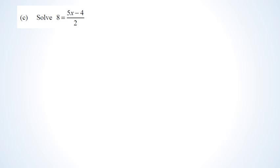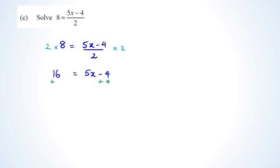With this question you've been asked to solve for x. The first thing I'm going to do is get rid of that 2, so I multiply both sides by 2, which means my left-hand side equals 16. Then on my right-hand side I've got 5x minus 4. Next I add 4 to both sides to get 20 equals 5x, then divide both sides by 5, giving x equals 4.